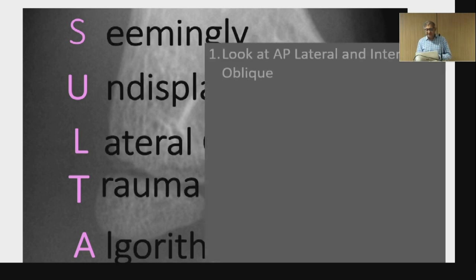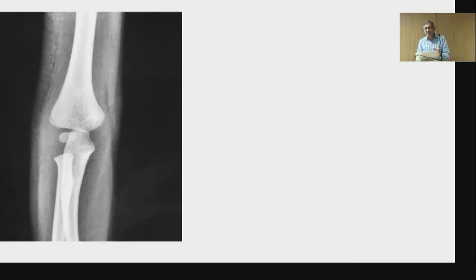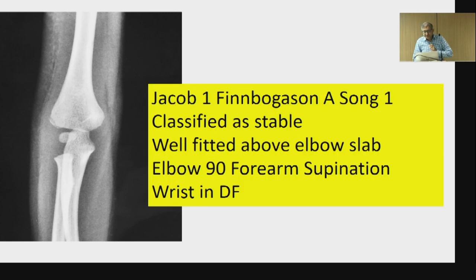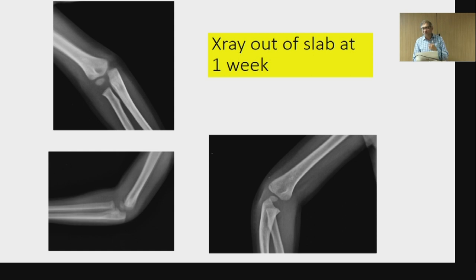Let's go through some case examples. This is a five-year-old child with lateral condyle fracture. On AP and lateral, the fracture in internal oblique view is going only into the metaphysis — not into the epiphysis. So this is Jacob 1, but also Finn-Borgeson A or Song 1, classified as a stable fracture. This should be treated with a well-fitted above-elbow slab — not plaster — with elbow in 90-degree flexion, forearm in supination, and wrist in dorsiflexion. Wrist in dorsiflexion relaxes the common extensor origin so it will not displace the fracture. With this slab, call the patient back at one week, remove the slab, take an X-ray, and if the fracture is not displaced further, put it in cast in the same position.